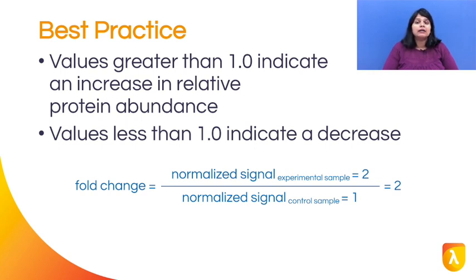Values greater than 1 indicate an increase in relative abundance, and values less than 1 indicate a decrease in relative protein abundance.